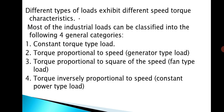Next, we look at different types of loads with different speed-torque characteristics. This is important and has been asked in university examinations. Most industrial loads can be classified into four general categories based on their speed-torque characteristics. The first category is constant torque type load.